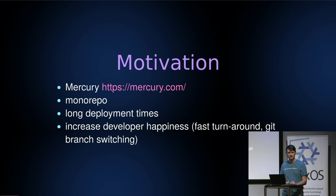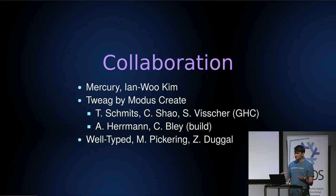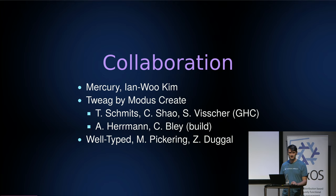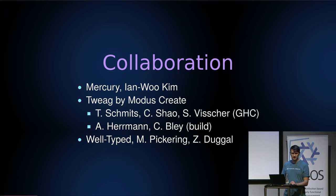When developers switch branches, the native tool — which is currently Cabal — is going to rebuild lots of stuff unnecessarily. It's not cached, so we're trying to improve that situation. That work is a collaboration. We are working together with Mercury, obviously, with Ian who is the lead of the whole operation. We also have colleagues at Tweag from the compiler team providing patches for the Haskell compiler, Andreas and myself on the build team, and some people from Welttype involved.